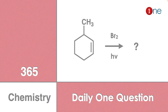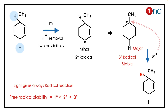The answer lies in the stability of the radical. You are using light, so the whole reaction is a free radical mechanism. There are two different types of hydrogens present, so two different types of allylic radicals are possible. Allylic radicals are stable, so they form.